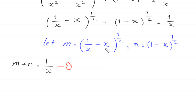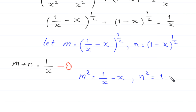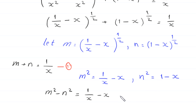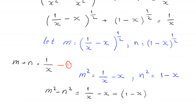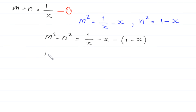If we square both sides of the m definition, then m squared equals 1 over x minus x. And if we square both sides of the n definition, then n squared equals 1 minus x. Now we subtract the n-squared equation from the m-squared equation, giving m squared minus n squared equals 1 over x minus x.